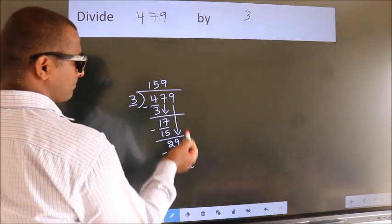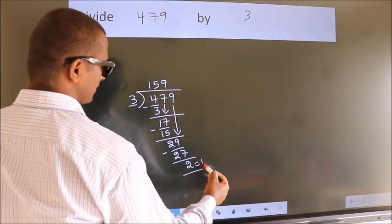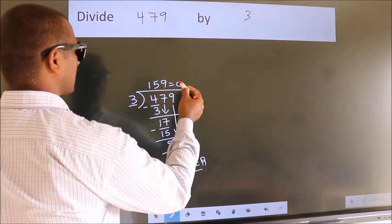No more numbers to bring down. So we stop here. This is our remainder. This is our quotient.